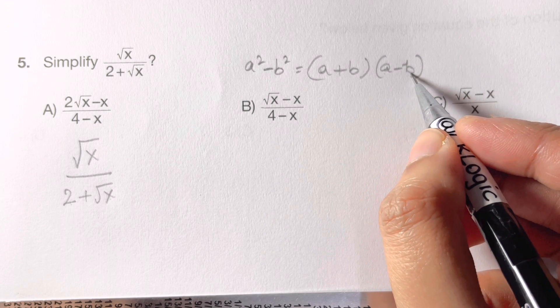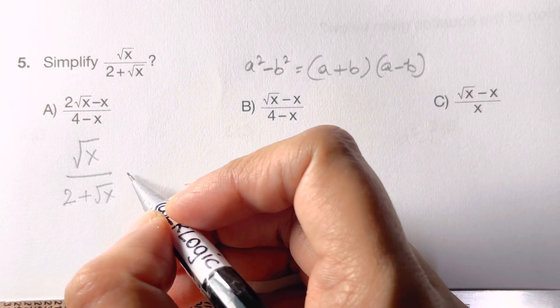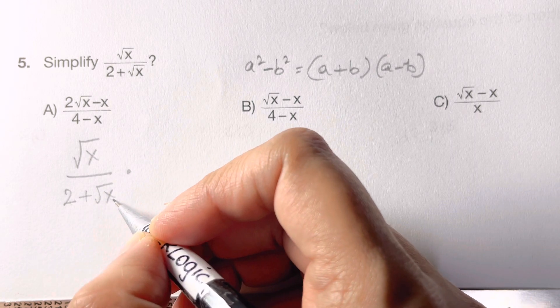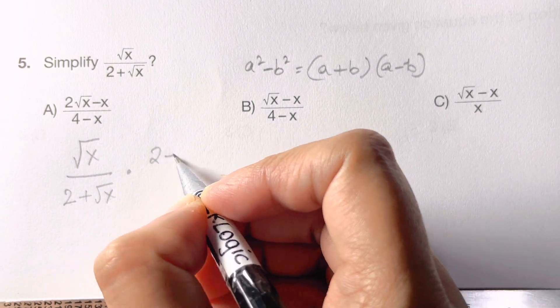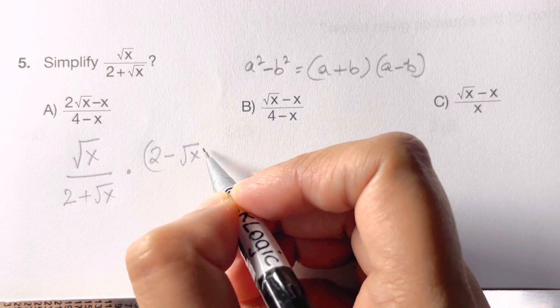So here you have a plus b. What you need is a minus b. So you multiply it with a minus b. What is our a? 2, and this is root x. So 2 minus root x, that's your a minus b.